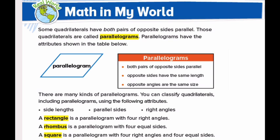We also have a rhombus. A rhombus is also a parallelogram, and all the sides of the rhombus are equal in length. The last parallelogram is a square. A square has four right angles and four equal sides. So a square and a rectangle both have right angles, and a square and a rhombus both have equal sides.